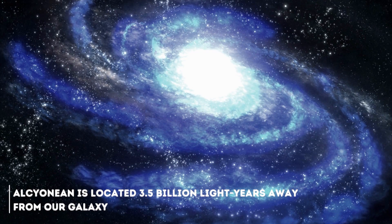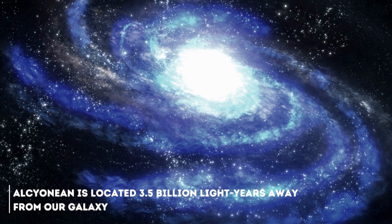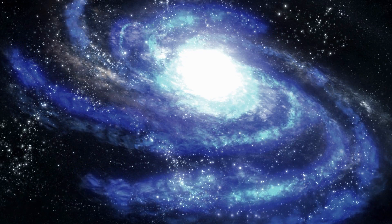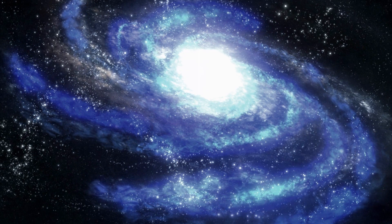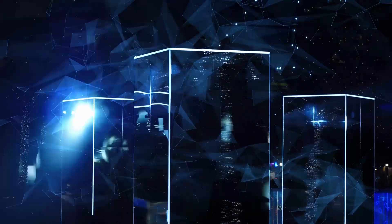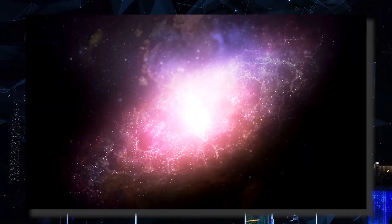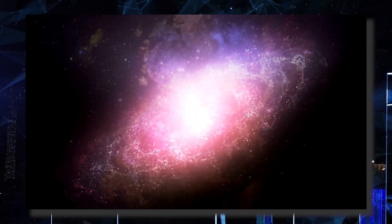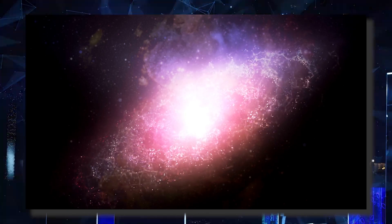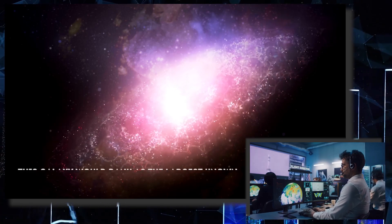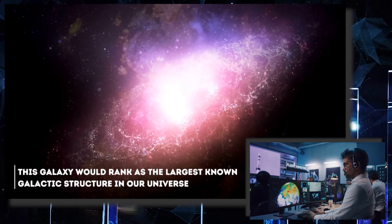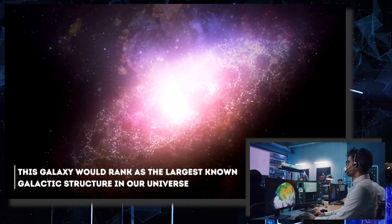Alcinean is located 3.5 billion light years away from our galaxy. According to several scientists, this galaxy is one of the strangest things ever found in our universe. The beginning of its history is complicated in itself. This massive and imposing galaxy was discovered by accident, in what has been catalogued as a great stroke of luck. Estimates made by scientists indicate that this galaxy would rank as the largest known galactic structure in our universe.